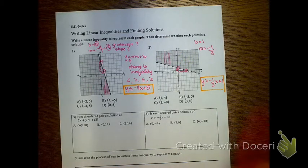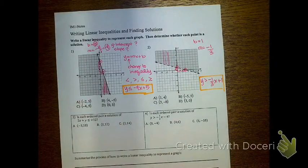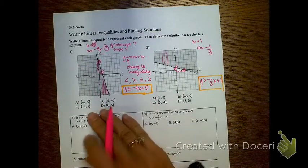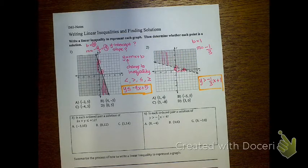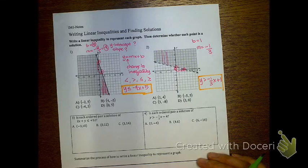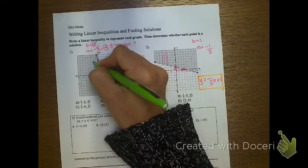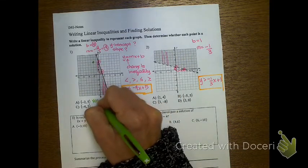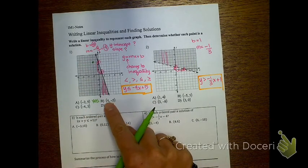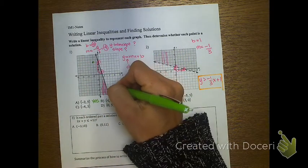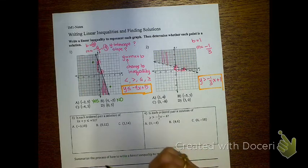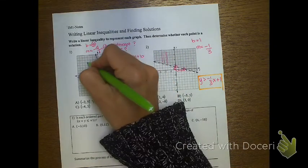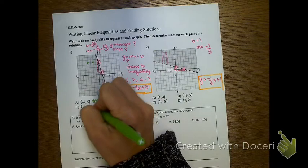Now determine whether each point is a solution. I'm going to take each point and write yes or no — whether it falls in the shaded area. Negative 2, 5 would be up here, so that is yes, it's in the shaded region. Point B is 4, negative 5 — that's not in the shaded region, so that would be a no. Negative 4, 5 would be up here, so that is yes, it's in the shaded region.